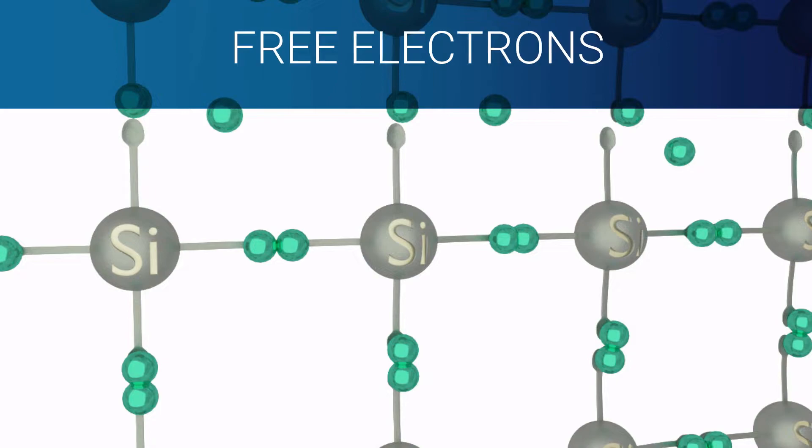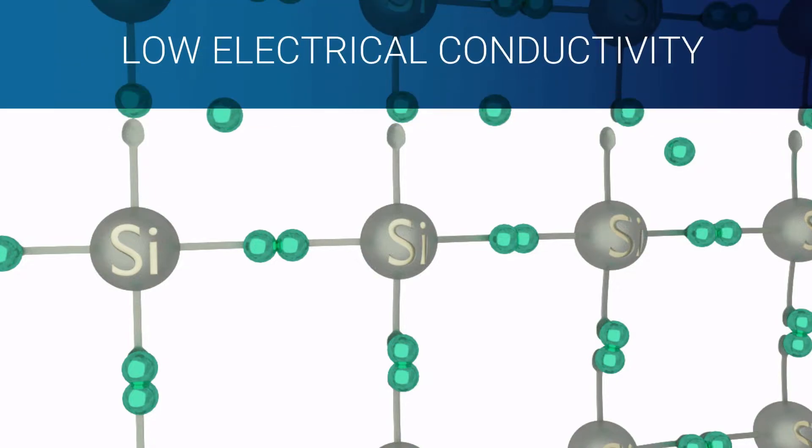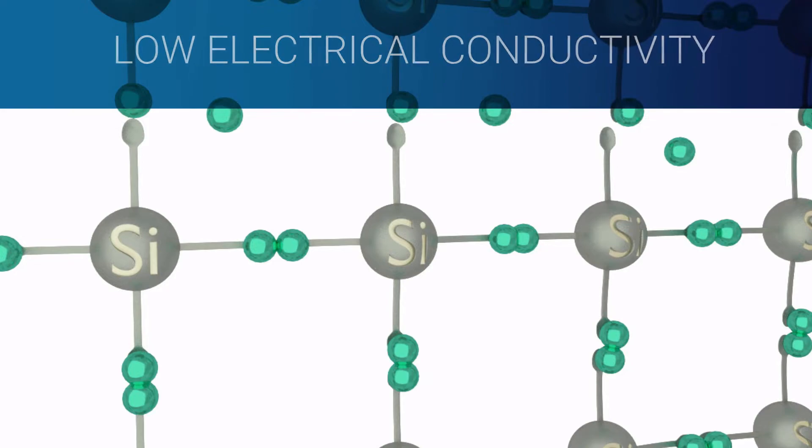In this situation, however, pure silicon will have low electrical conductivity. For this reason, a technique called doping comes into play.